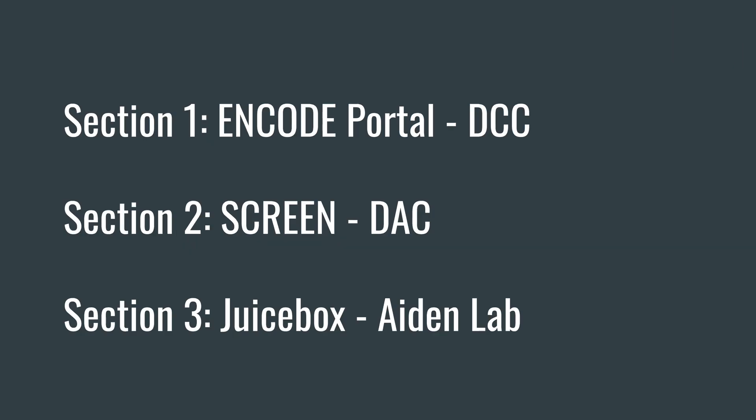To give you a brief overview of the workshop as a whole and the other videos you can explore, the three sections are focused on: 1. The ENCODE Portal, which is the repository and interface for ENCODE data presented by the DCC; 2. Screen, a web-based visualization tool for ENCODE annotations such as candidate cis-regulatory elements presented by the DAC; and 3. JuiceBox, a genome browser tool for visualizing 3D chromatin contact data such as Hi-C by the Aiden Lab.